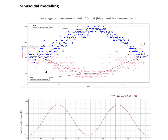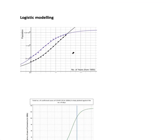Sinusoidal models are great for weather temperature in a given country, or for measuring climate change, like how much ice is in the North Pole. This guy's IA had an excellent aim: to figure out how much time the temperature in Melbourne is actually warmer than Dubai. Dubai is hotter almost all the time, but for just a couple of weeks — probably January — it's actually warmer in Melbourne. Great topic.